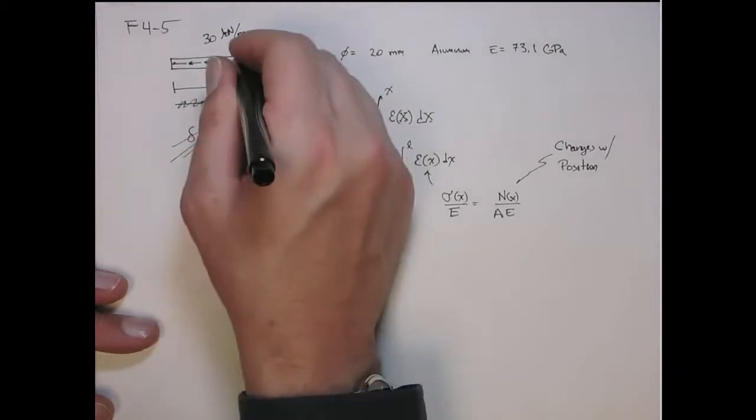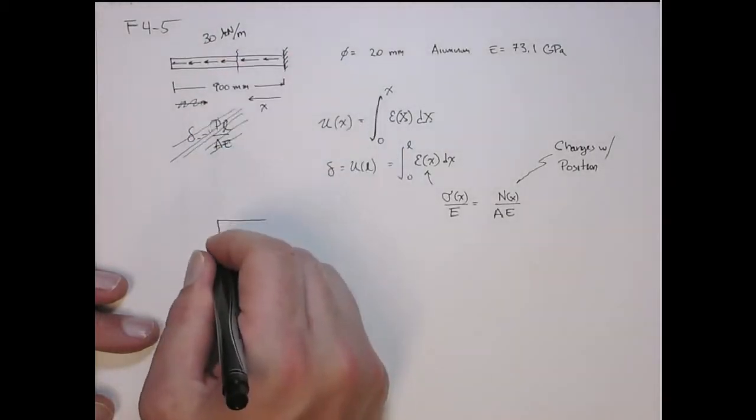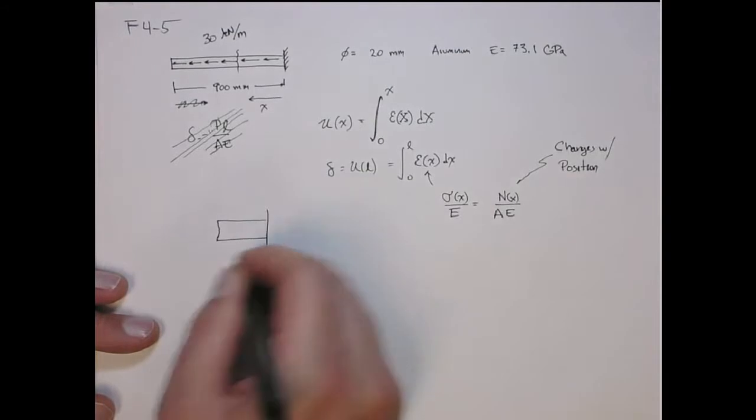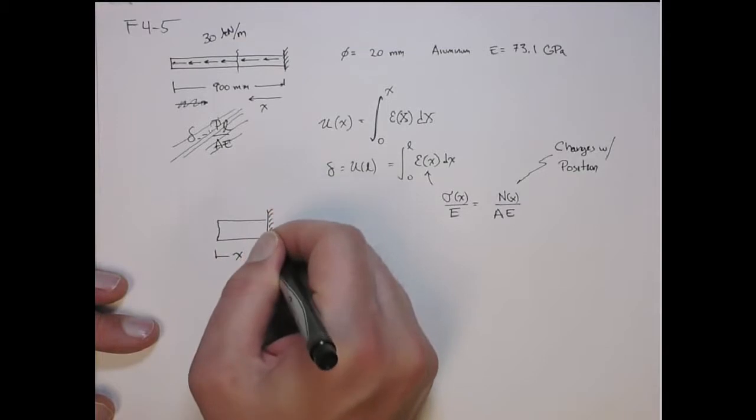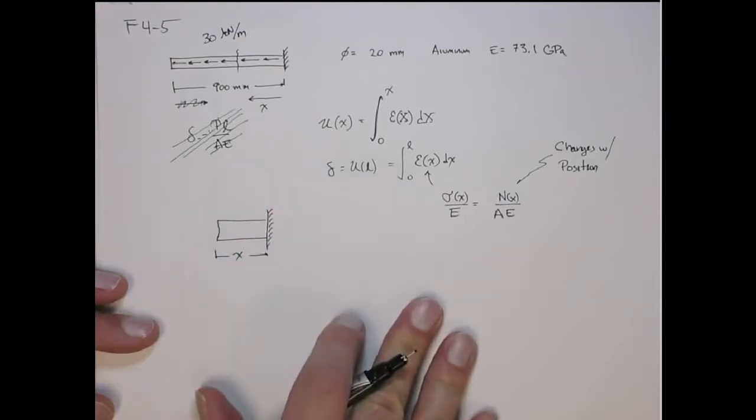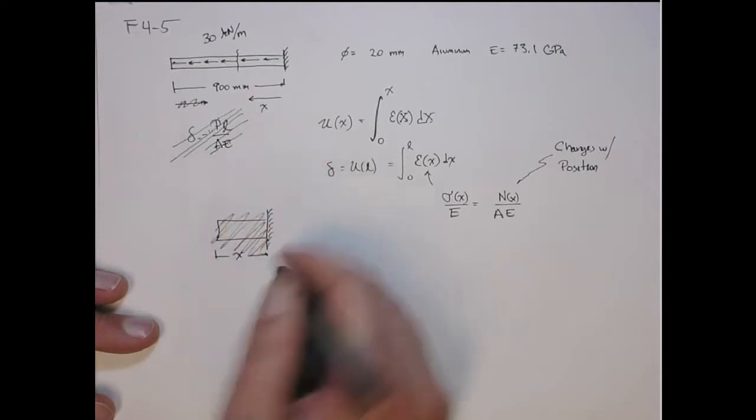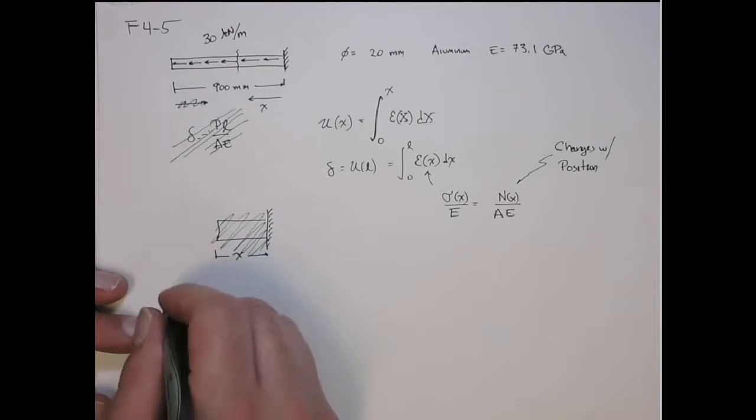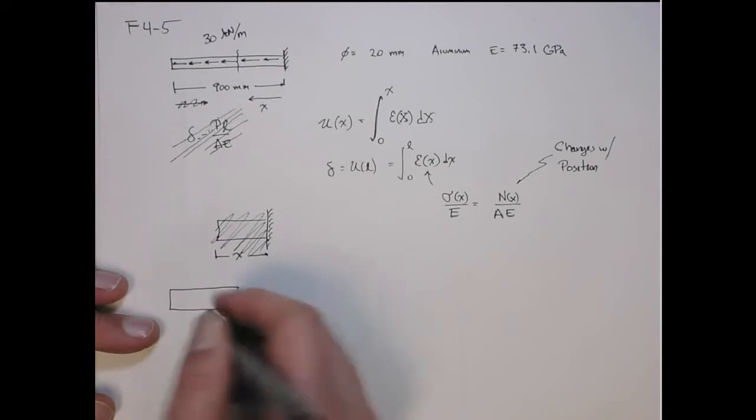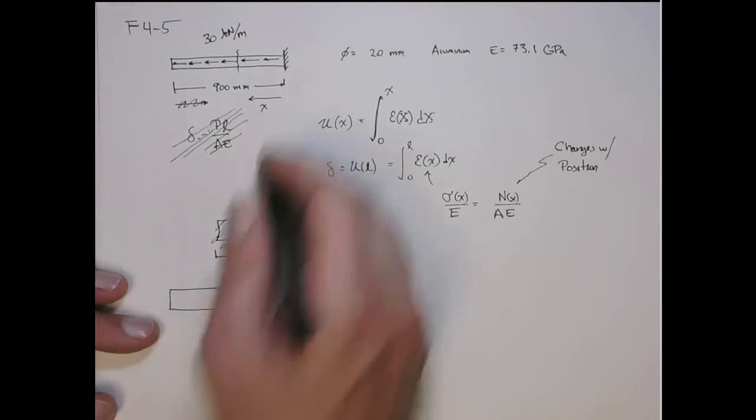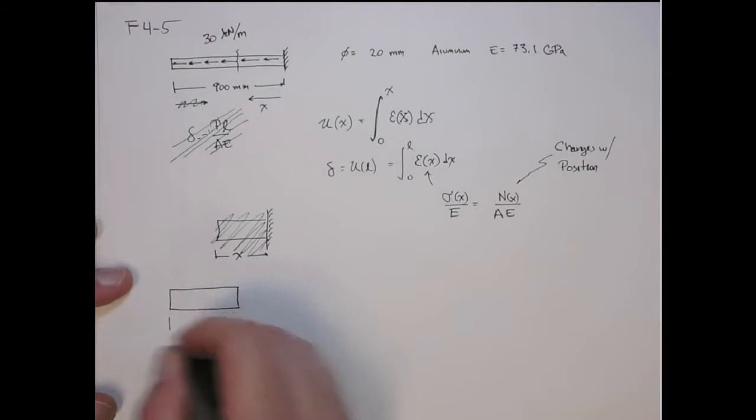Let's draw a section, not at a particular point but at some general point, a distance x from the right-hand side. Let's do it from the other way, so I don't have to deal with the reaction force. So if this is x, then this distance here is L minus x.